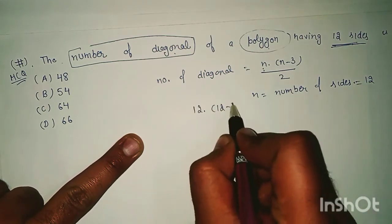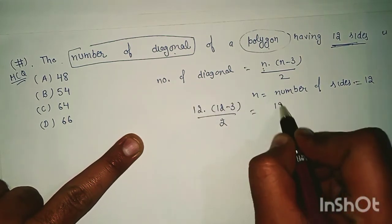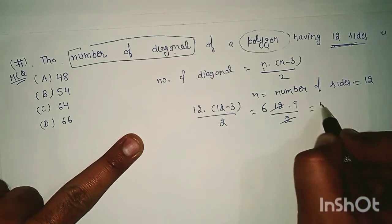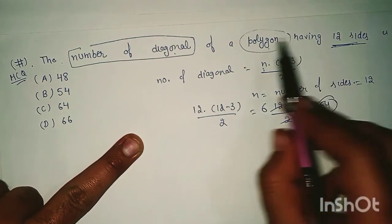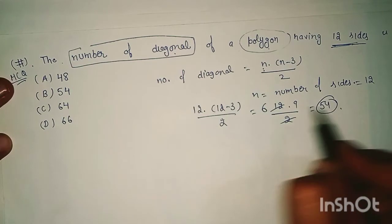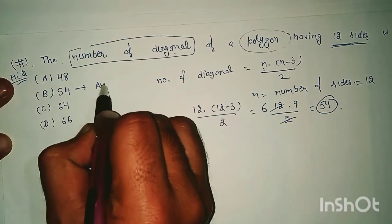12 into 12 minus 3 by 2 is equal to 12 into 9 by 2. The answer is 54. So if you have a polygon with 12 sides, the number of diagonals is 54. 54 is option number B. So this is the answer.